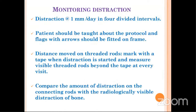Regarding monitoring distraction: normally distraction is done at the rate of one millimeter per day in four divided intervals — everybody knows this. The patient has to be educated about this protocol, and preferably flags with arrows should be fitted on the frame to guide patients for distraction. On follow-ups, the distance moved should be checked clinically on the threaded rods — this can be done with a tape applied to the connecting rod. This should be compared with the distraction achieved radiologically at the corticotomy site.